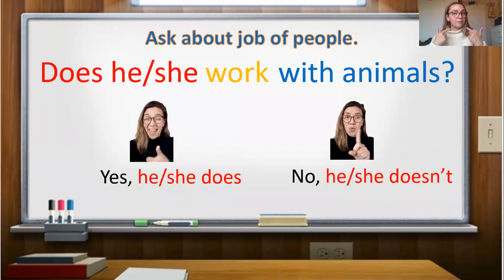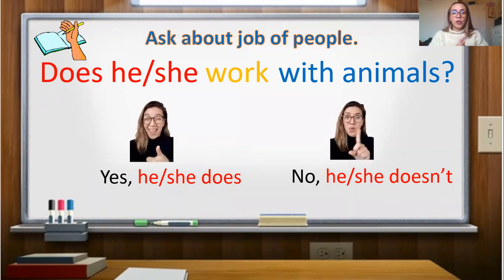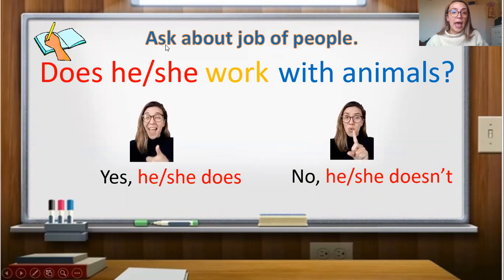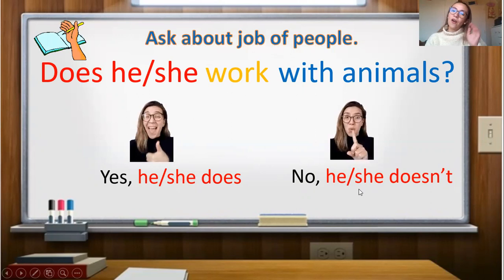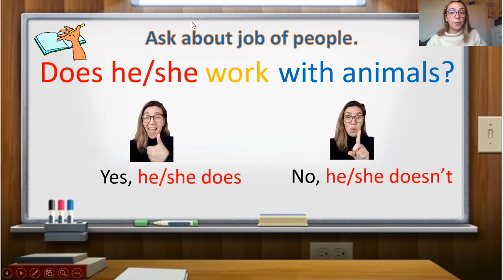Please open your English copybook — necesito que abras tu cuaderno de inglés — and write down the title 'Ask about job of people,' the question, hopefully using different colors as shown on the screen, and the two answers — the affirmative and the negative. Take your time, pause the video, and when you're ready, press play again.